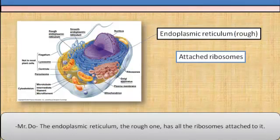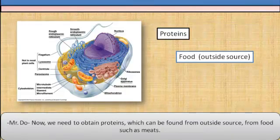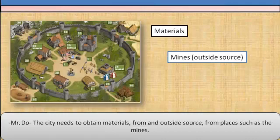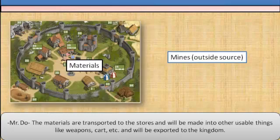The rough endoplasmic reticulum has all of the ribosomes attached to it. The market is where you'll find all sorts of stores. Now, we need to obtain proteins, which can be found from outside sources, from foods such as meats. The city needs to obtain materials from an outside source, from places such as the mines. The proteins are broken down into amino acids and are transported to the ribosome to make different proteins usable by the body. The materials are transported to the stores and will be made into other usable things, like weapons and carts, that will be exported to the kingdom.